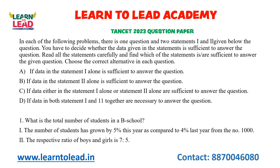Now the question: what is the total number of students in a B-School? Statement 1: The number of students has grown by 5% this year as compared to 4% last year, starting from 1000. So first there is 1000, then a 4% increase — 4% of 1000 is 40, giving 1040. Then a 5% increase on 1040 is 52. So 1040 plus 52 equals 1092 students in the B-School.